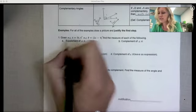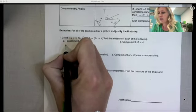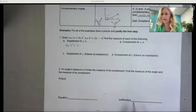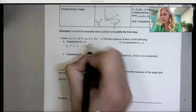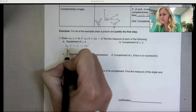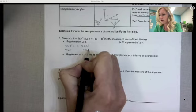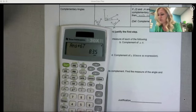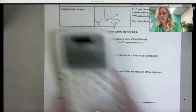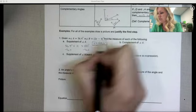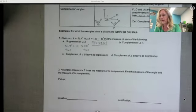What that means is they want what angle when I add it to A gets me to 180 degrees. So we're going to say angle A, which is 56.4 degrees plus its supplement, so some unknown angle measure, has to equal 180 degrees because we're looking for a supplement which goes with supplementary. So if I just subtract 56.4, we get the supplement to equal, so we're doing 180 minus 56.4, and we get 123.6 degrees.